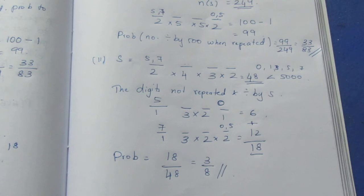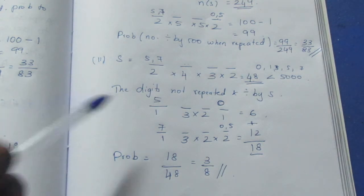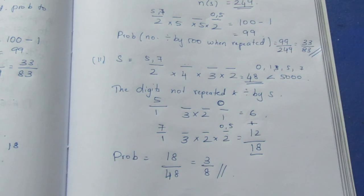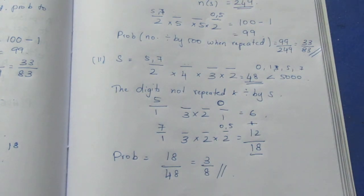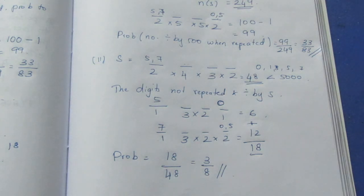So in the no-repetition case, the sample space requires care. Permutation and combination makes it easy to solve probability problems. Thank you.